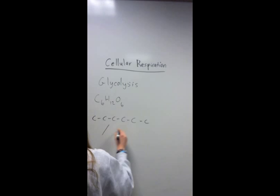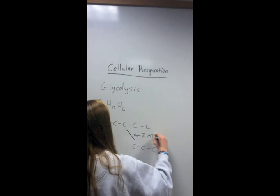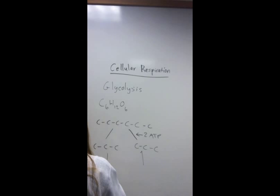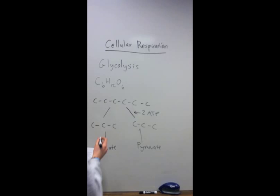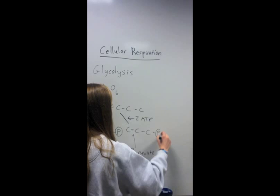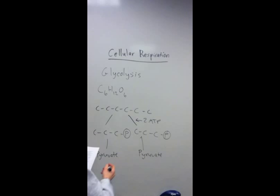It is composed of six carbons. It is then broken down into two molecules that are three carbon molecules, and this uses two ATP. Then these two molecules turn into what is called pyruvate. Basically pyruvate is a three carbon molecule with a phosphate attached. The process of glycolysis produces two ATPs per molecule of pyruvate and one NADH each.